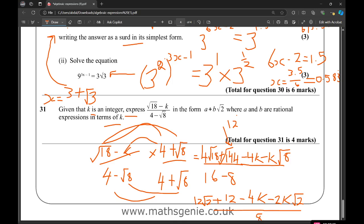Let's write this more neatly. We're going to have 12 minus 4K all over 8. Then we've got plus 12 root 2 minus 2K root 2 all over 8.